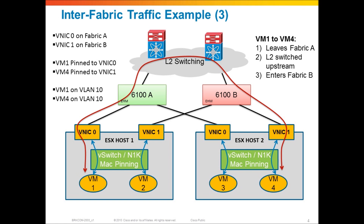This is another example of inter-fabric traffic between two servers managed by UCS, where traffic leaves one fabric, goes to an upstream network, and comes back down into the same UCS system on the other fabric - for both Layer 2 and Layer 3 flows, since the fabric interconnect is not a Layer 3 switch.